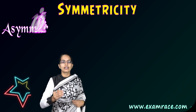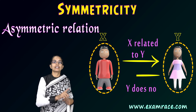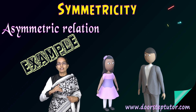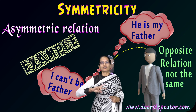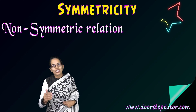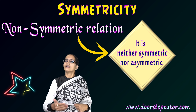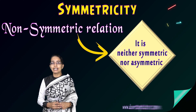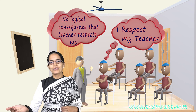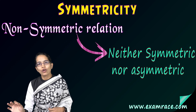When I say asymmetric, it means x is related to y in a certain fashion but that does not mean y is related to x in the same fashion. For example, if my father is here, I cannot be the father — that cross relation is not correct, and that is what is asymmetric. Non-symmetric means it is neither symmetric nor asymmetric. For instance, if I respect my teacher, that does not mean the teacher would respect me — that is a non-symmetric relation.